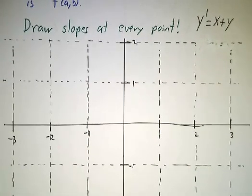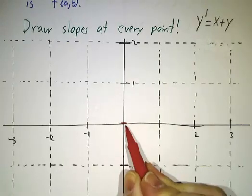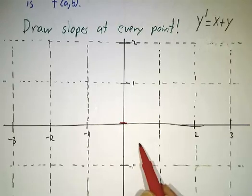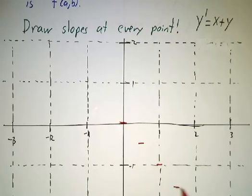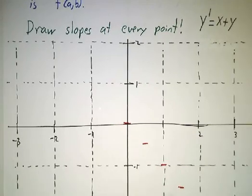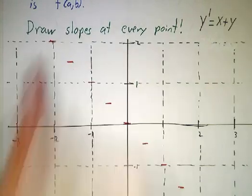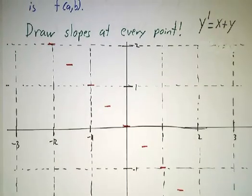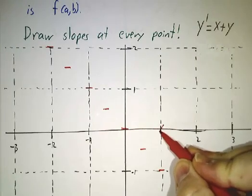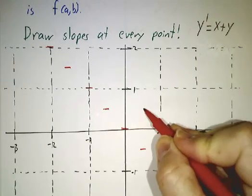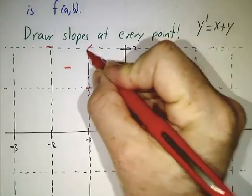We know that if the solution goes to the origin, x plus y is zero at the origin, so it's going to have to be horizontal. Likewise, it's going to have to be horizontal everywhere on the line x plus y equals zero. Now if we go through the point where x plus y equals one, it's going to have slope one — slope one here, here, and all along that line.